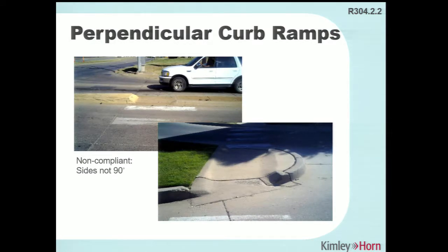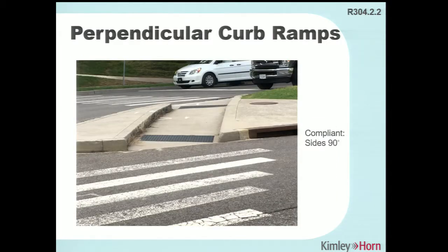Here are examples of cut-through curb ramps that are non-compliant: the curbs are required to be built up at 90 degrees. In these examples, someone could roll an ankle walking over a 45-degree sloped curb side, or a wheelchair could get up on that slope and potentially tip over. Curb sides must be perpendicular, right at 90 degrees.